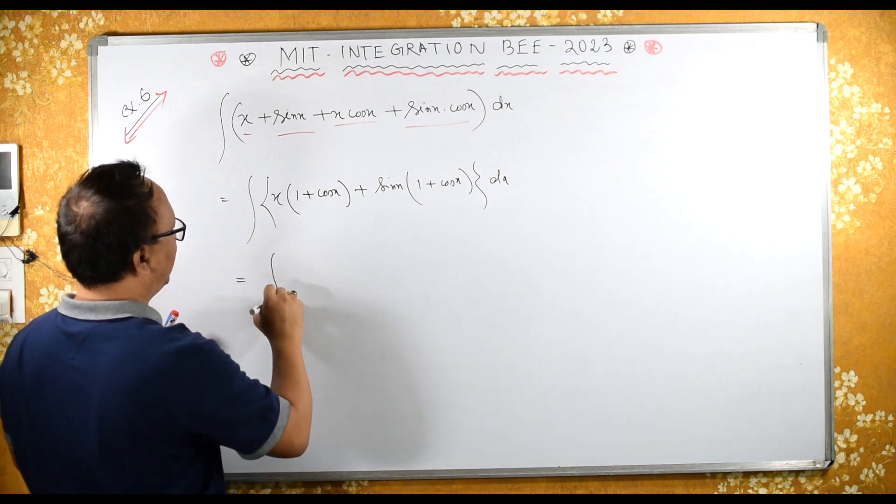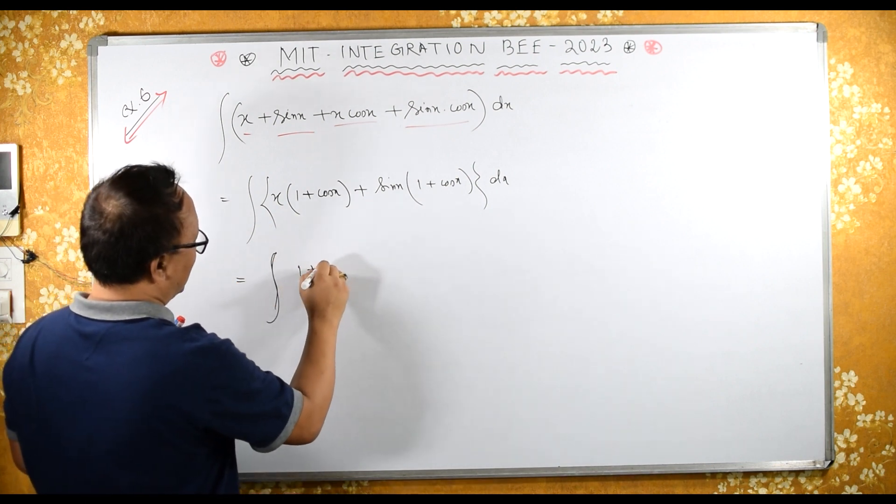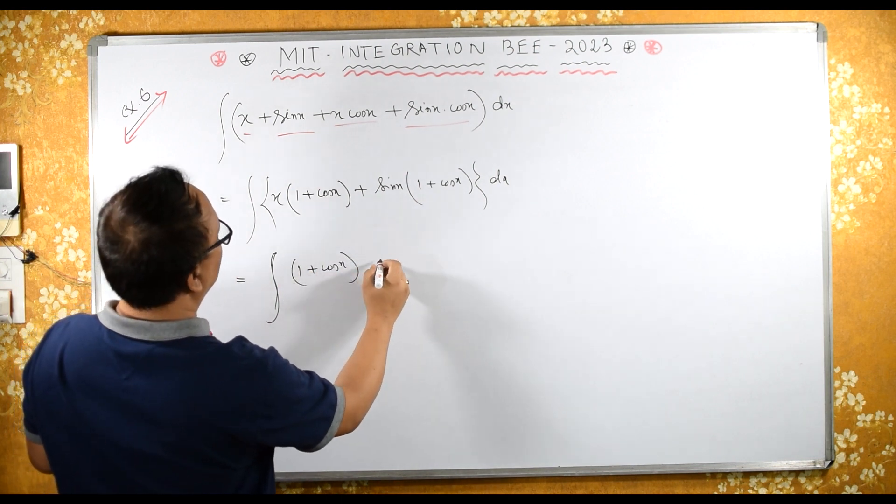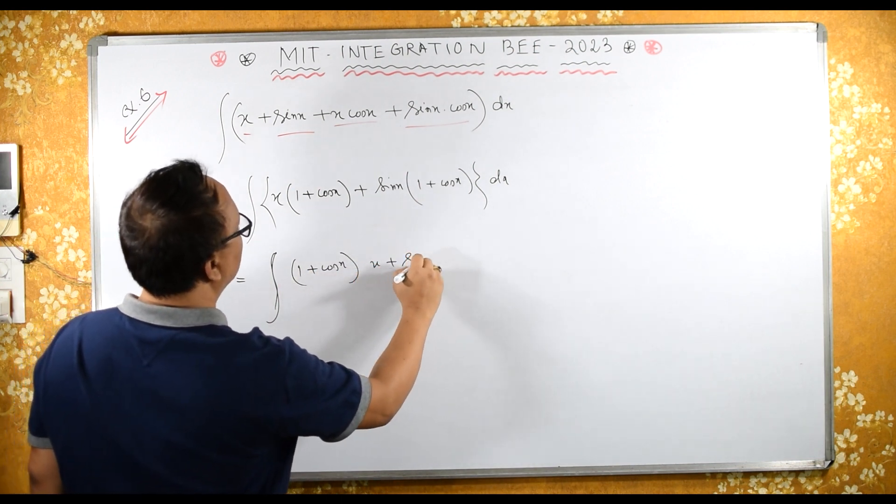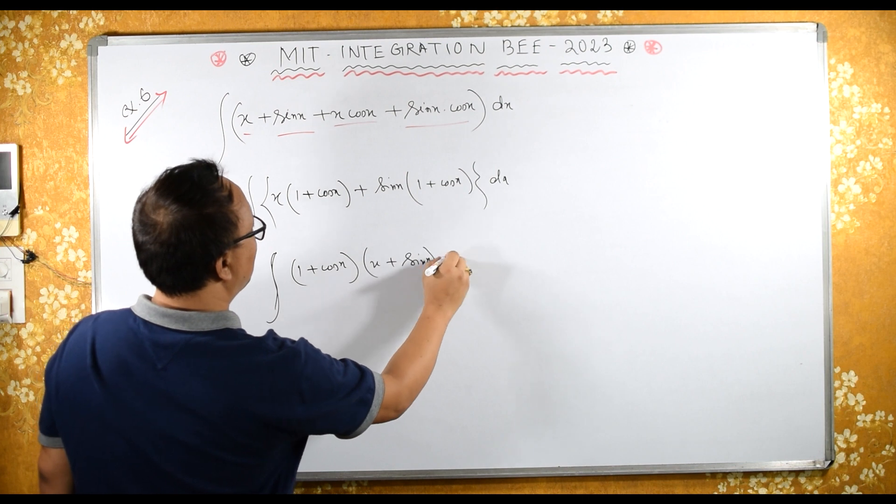If I take 1 plus cos x common, here I will have x plus sin x dx.